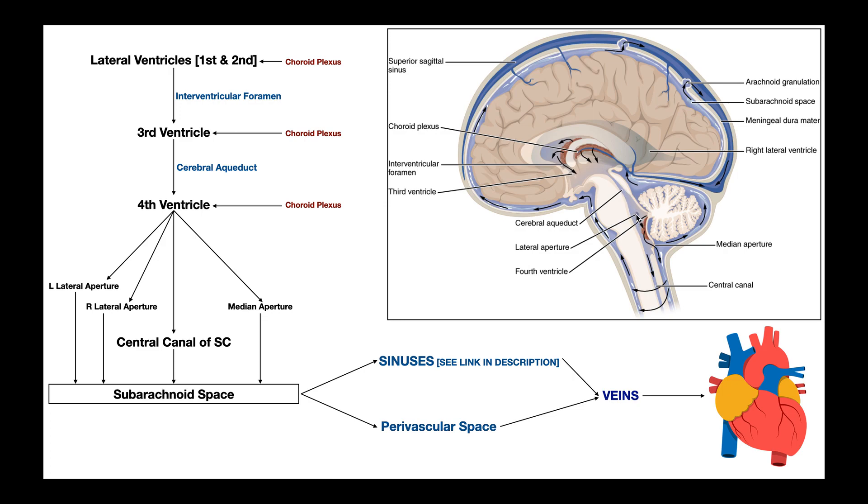Right here, just anterior to the cerebellum but posterior to the pons, this is the fourth ventricle. This also has a choroid plexus, which gives it more cerebrospinal fluid. As you go inferiorly, it narrows into the central canal of the spinal cord. This is not a branch of the fourth ventricle, it's a continuation. It goes down the length of the spinal cord.